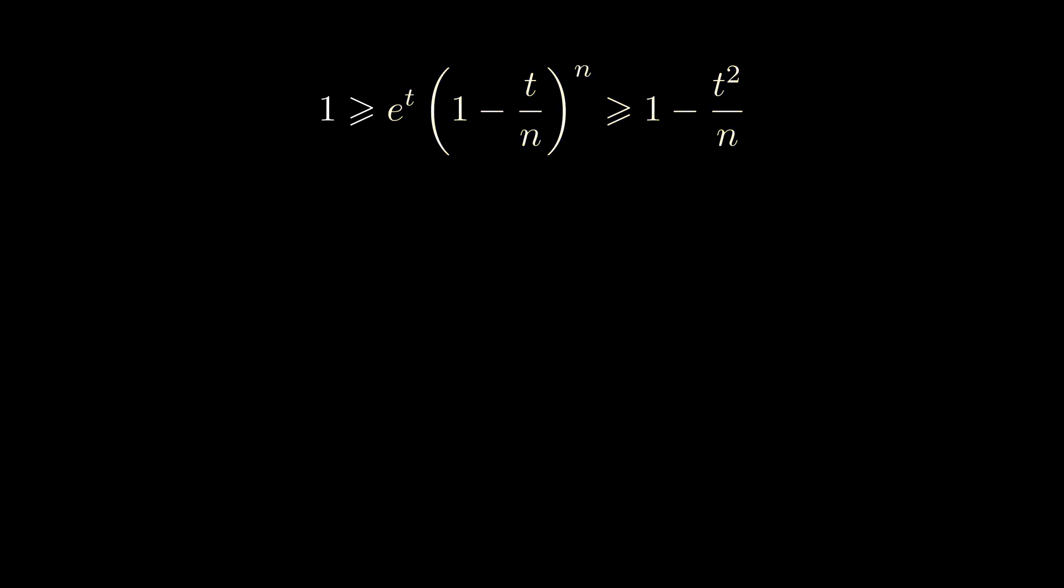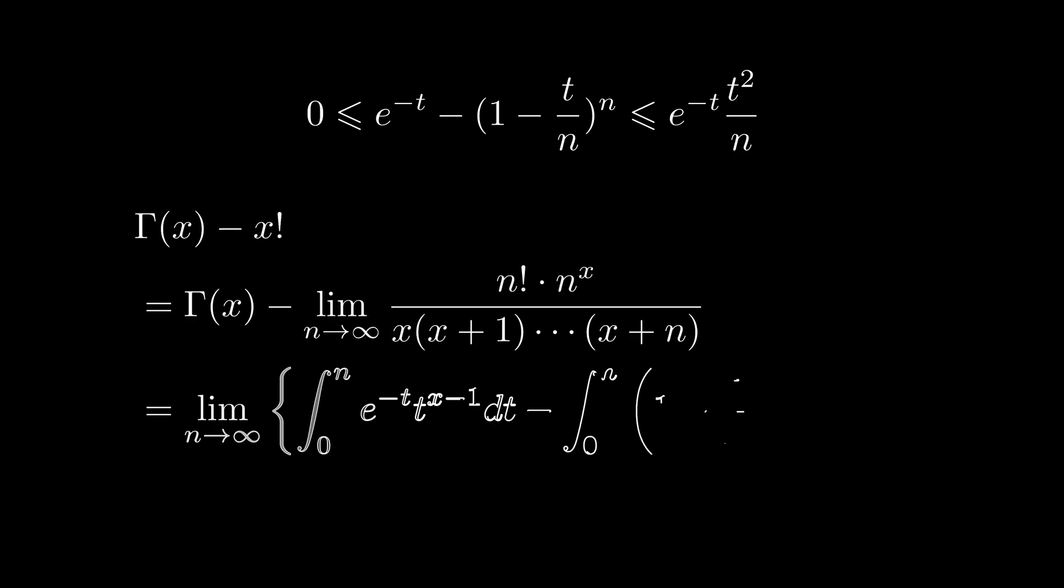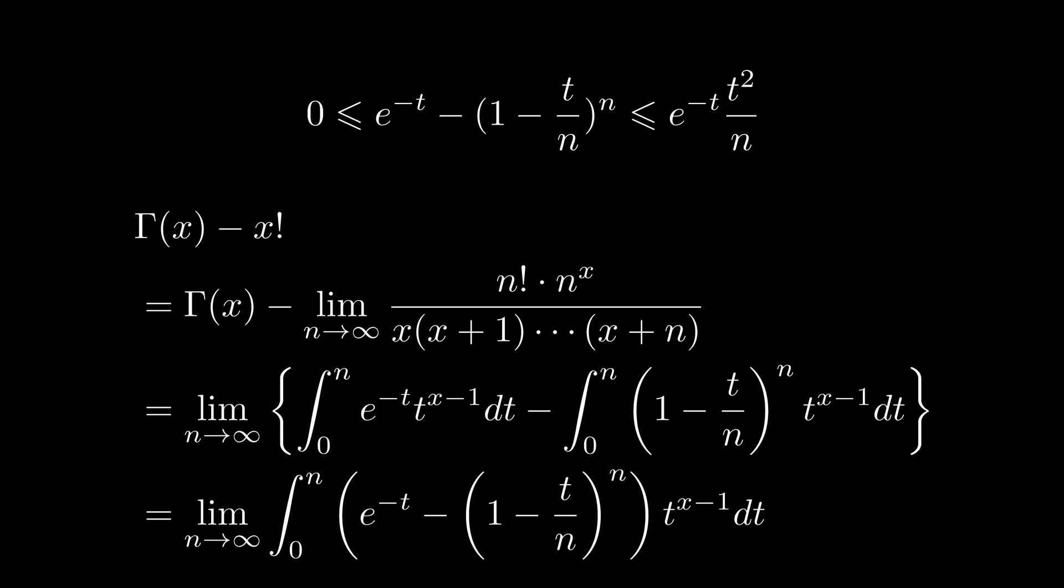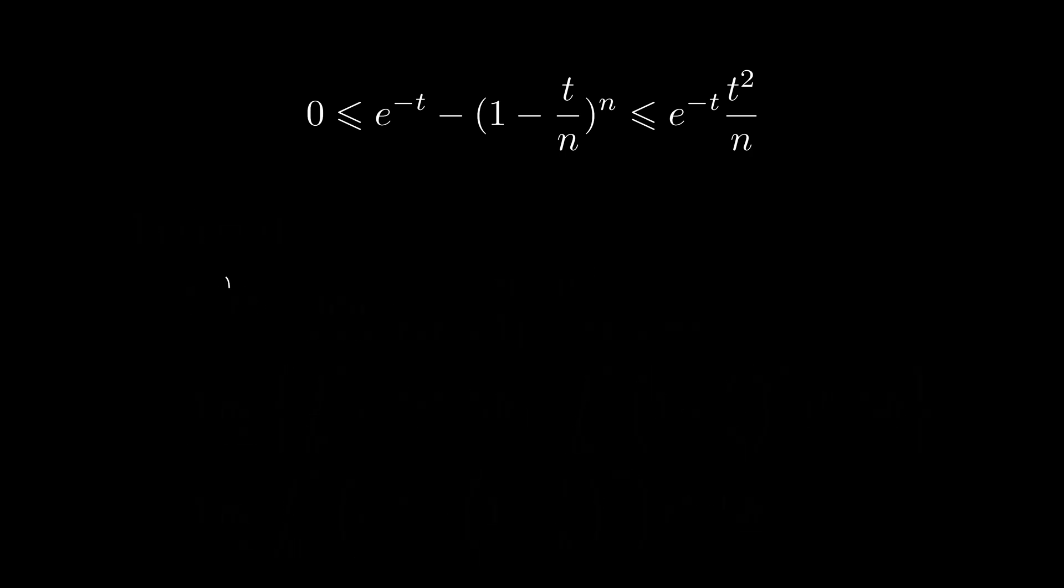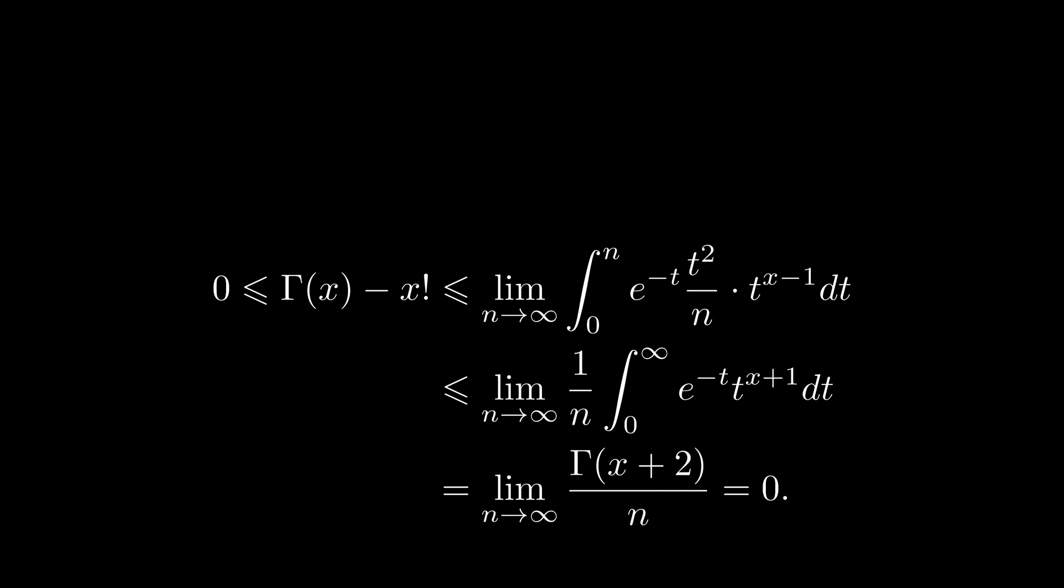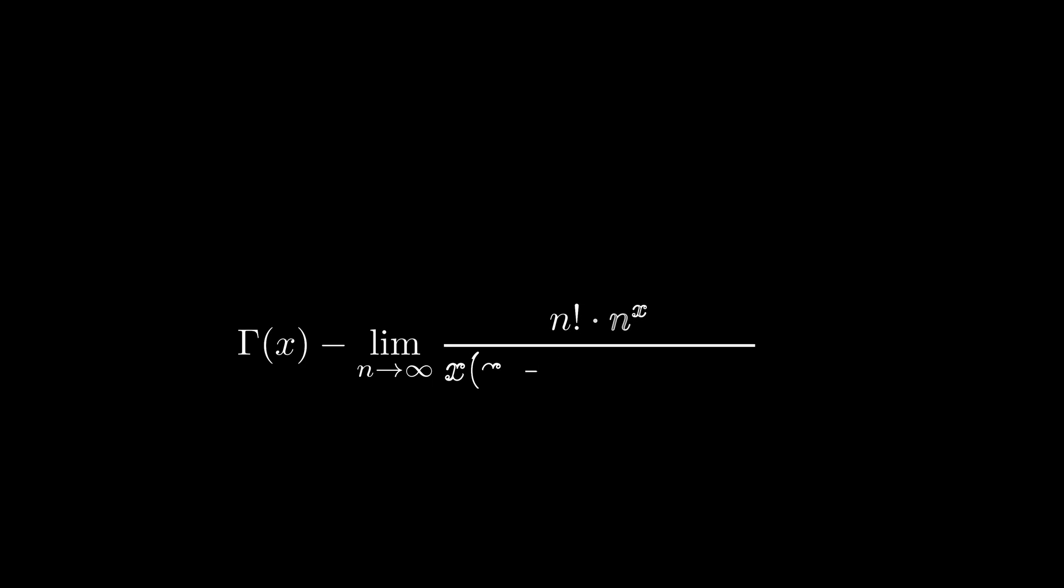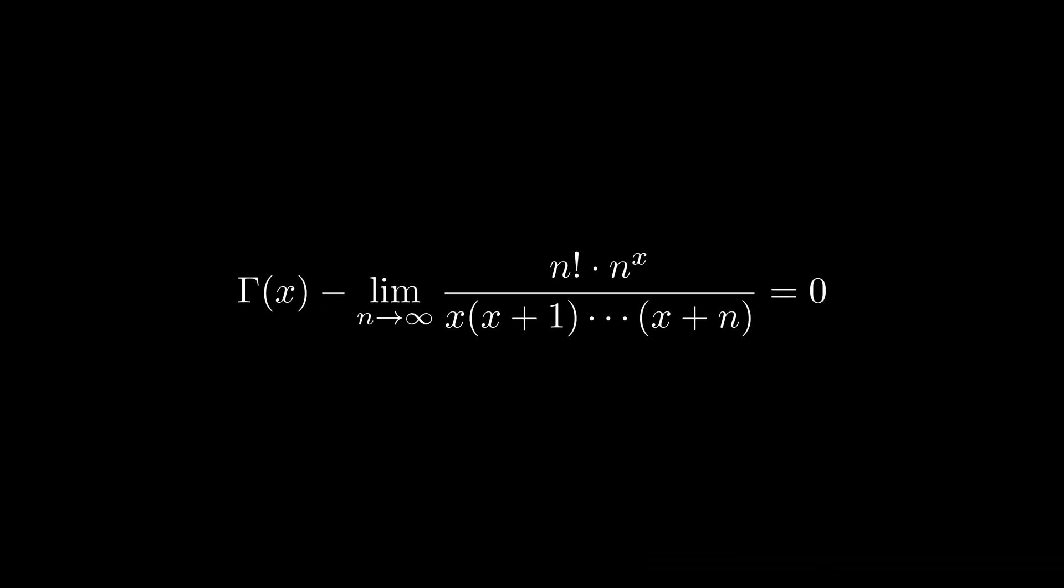Alright, remember where we started? We proved that this inequality is true. Now let's make use of it. First, we started by taking the difference between these two integrals. Part of the integrand is bounded by our inequalities. And when we send n to infinity, waha, both sides are zero. And this concludes our derivation of the gamma function from factorial, from scratch.